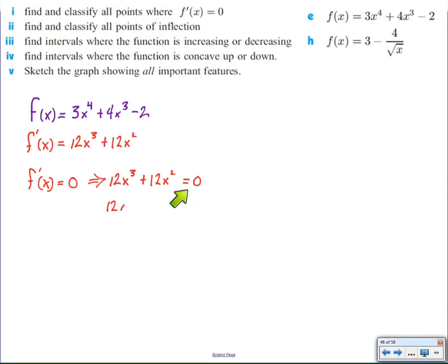Since I have this equal to zero, I should try factoring. I take out common factors of 12x squared, leaving me with x plus 1. So the two ways to make this equation equal to zero would be for x to equal zero or for x to equal negative 1, because negative 1 plus 1 is zero, zero times 12 is zero.